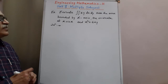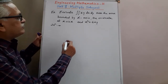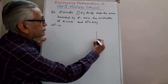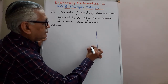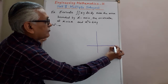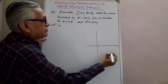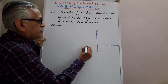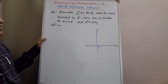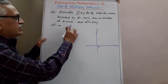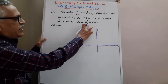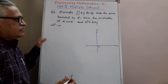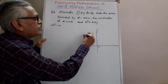We try to draw the figure for it in the xy coordinate system. Marking the x-axis, y-axis, and origin. The region is bounded by the x-axis, the ordinate at x equals 2a, and the curve x squared equals 4ay. This curve is symmetrical about the y-axis, passing through the origin, opening in the upper side.